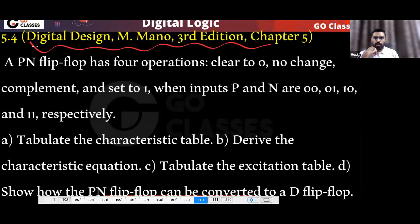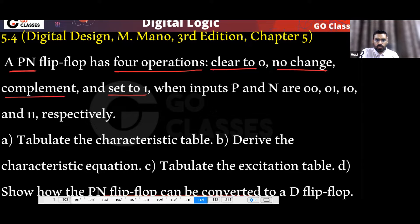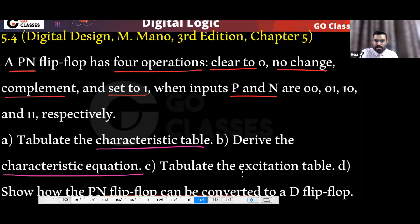This is another question from the Morris Mano book. A new flip-flop is given: a PN flip-flop has four operations. When P and N are 0-0, 0-1, 1-0, and 1-1 respectively, we get clear to zero, no change, complement, and set to one. We have to create the characteristic table, characteristic equation, excitation table, and also convert this PN flip-flop to a D flip-flop.